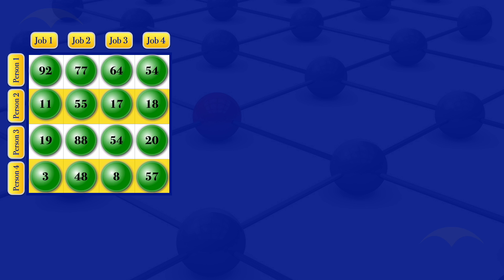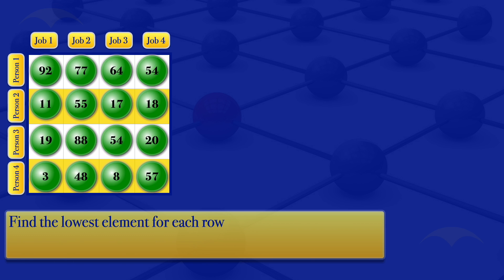Using the Hungarian method, we find the lowest element for each row. Looking at row number one, the smallest element is 54. Row number two, the lowest element is 11. Row number three, the lowest element is 9. Row number four, the lowest element is 3.